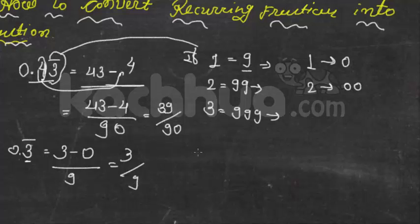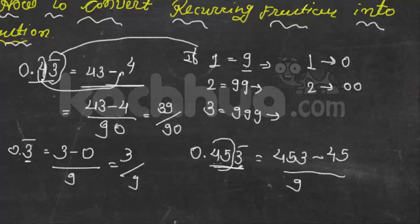Third example is 0.453 bar is equal to, after decimal point 453 bar is equal to 453 minus without bar 45 upon. One number has bar so put 9, and two numbers have not bar so 20 put in denominator.